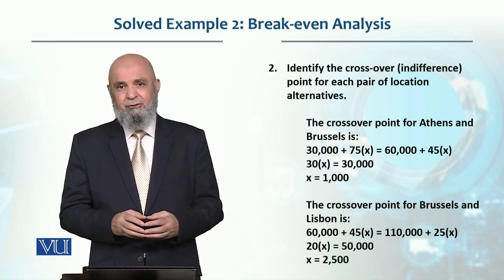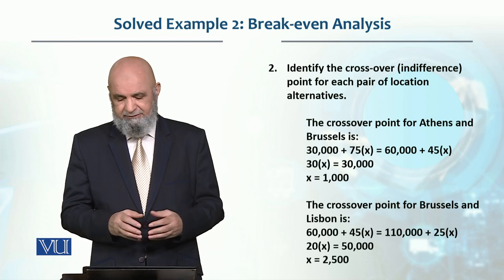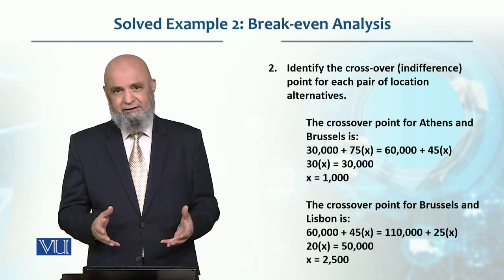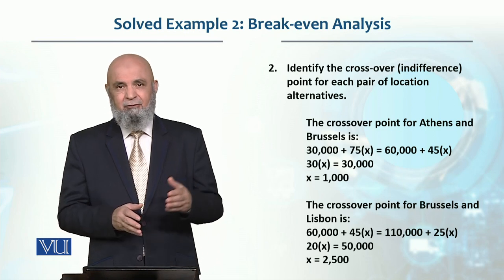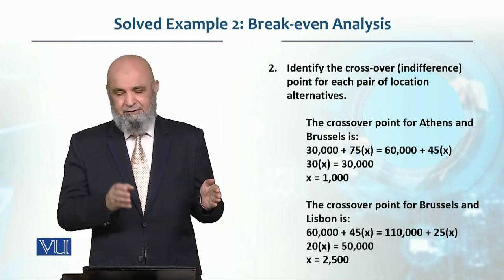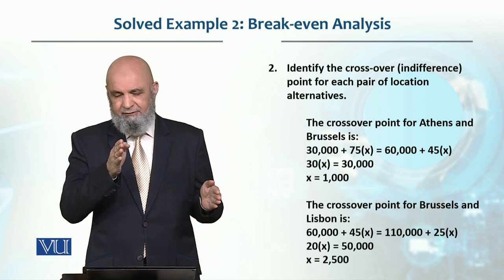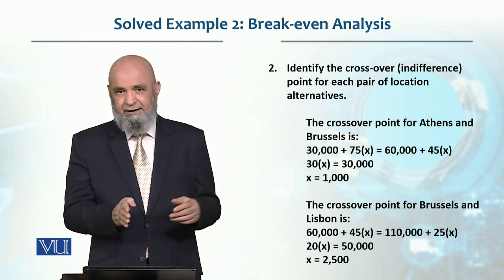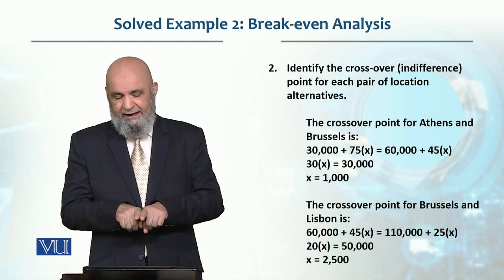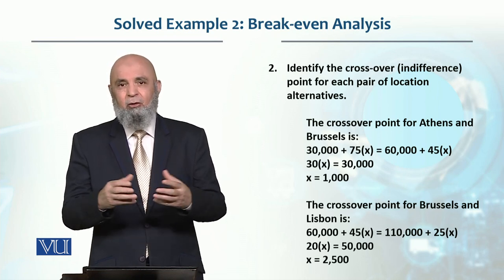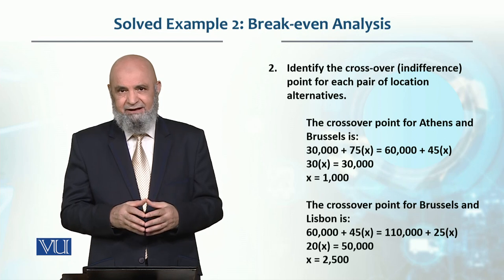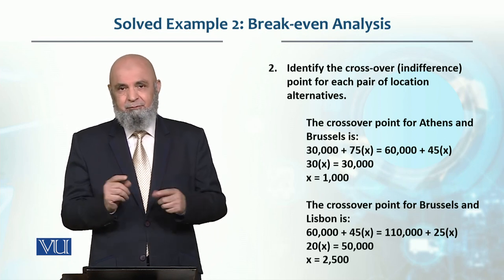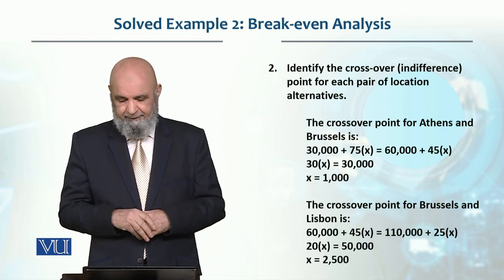30x equals 30,000, and solving for x gives us 1,000. That means at 1,000 units, if that is the forecast or demand, then in that case Athens and Brussels are both giving the minimum cost equally. It doesn't matter which country we select at this point — both give the same cost at 1,000 units.